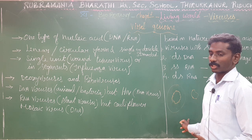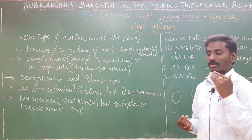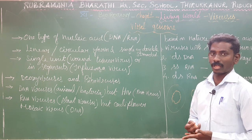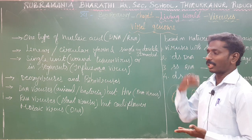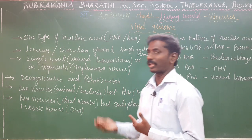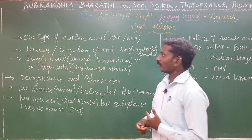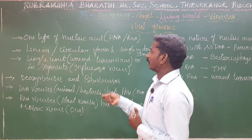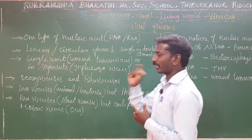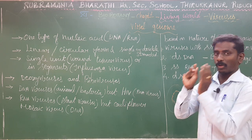The virus is the exception character. It can have double stranded RNA, single stranded RNA, single stranded DNA, and double stranded DNA. These are the characters in the virus. The nucleic acid can exist as a single unit — one single unit group in the entire nucleic acid.